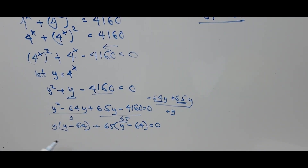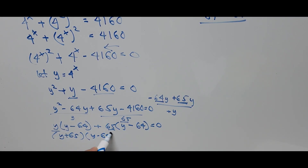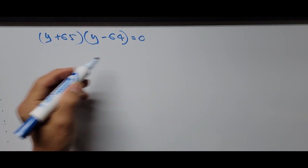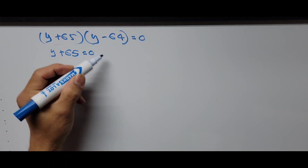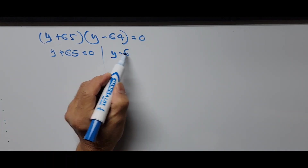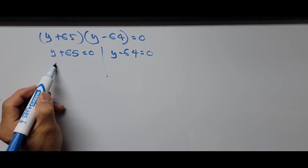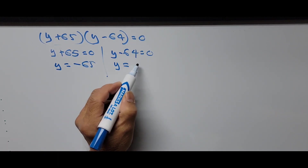This simplifies to (y + 65) times (y − 64) equals 0. We now have two binomial factors. Setting each equal to zero: y + 65 = 0 gives y = −65, and y − 64 = 0 gives y = +64. So we have two values of y.